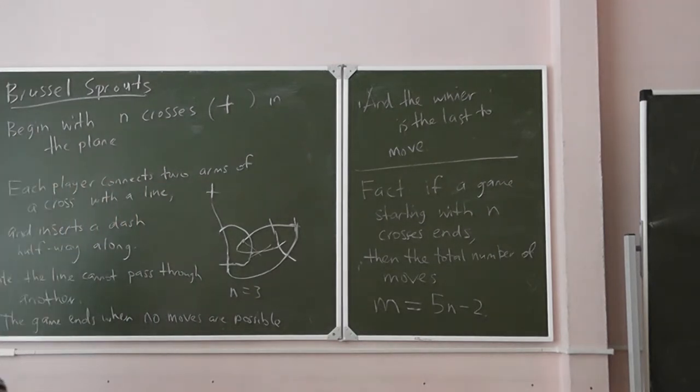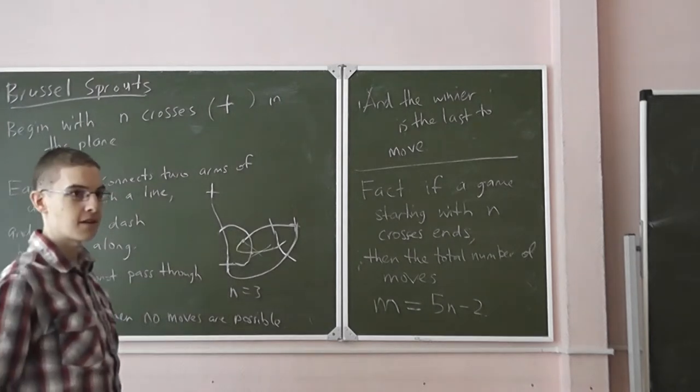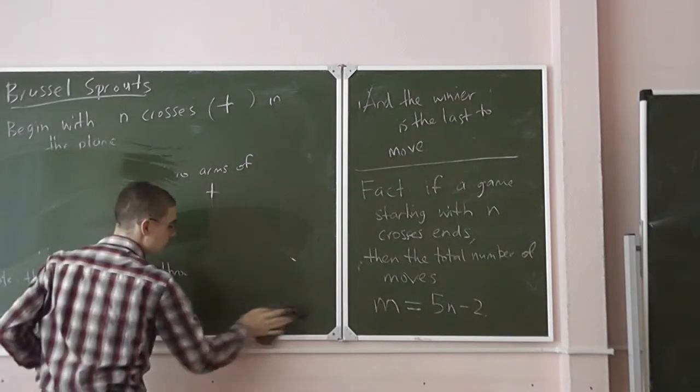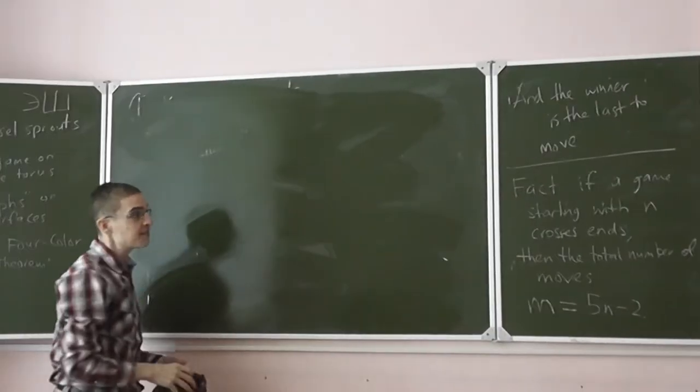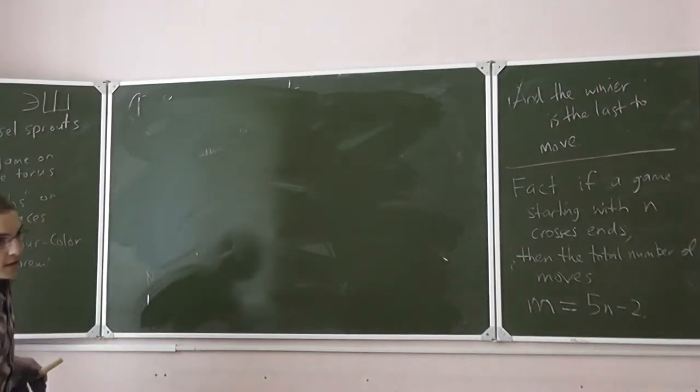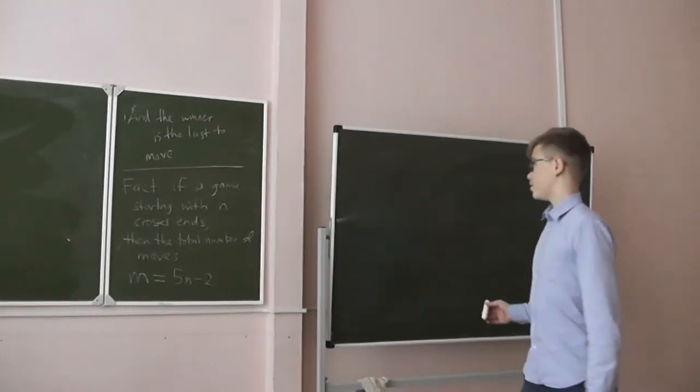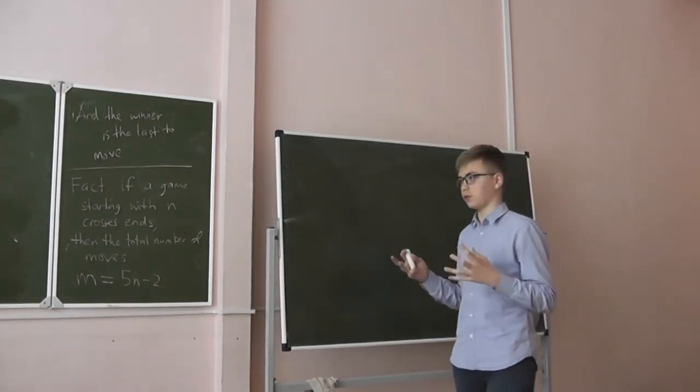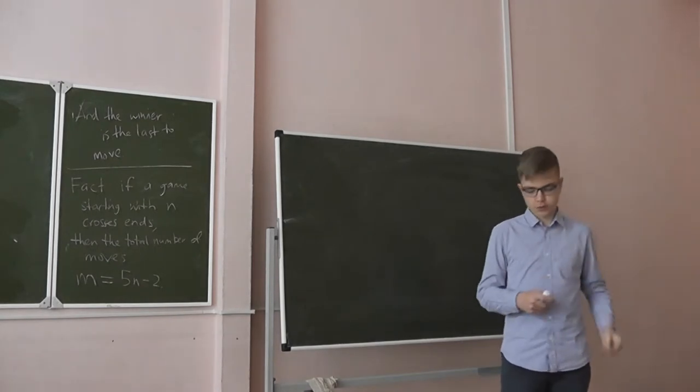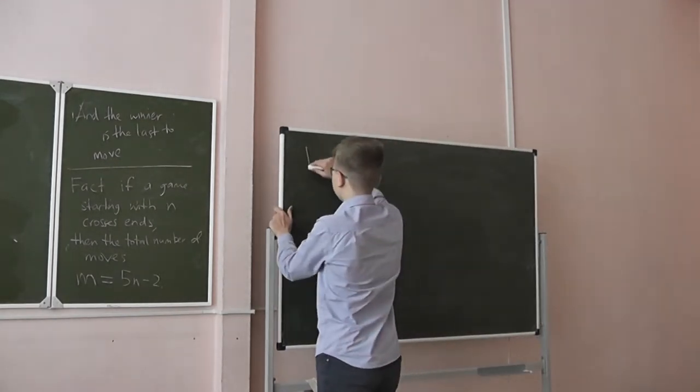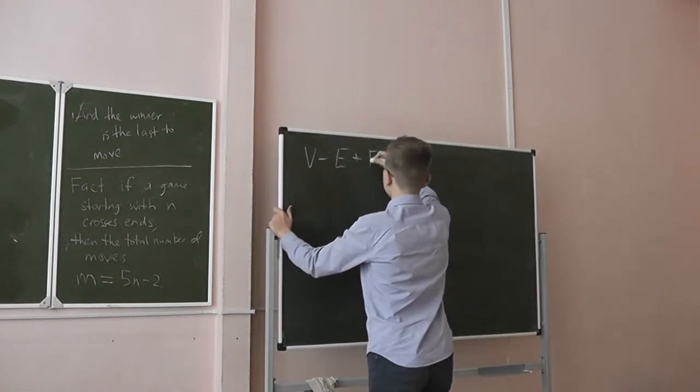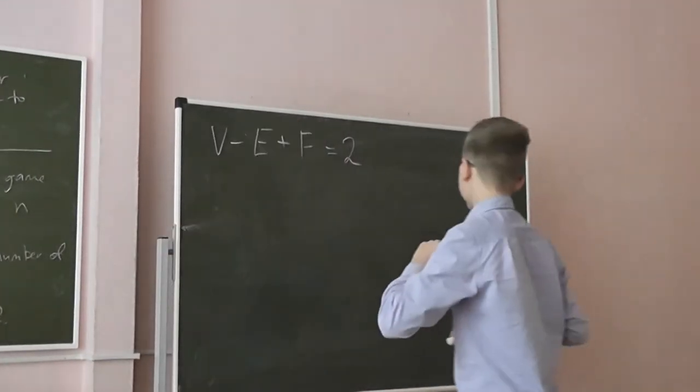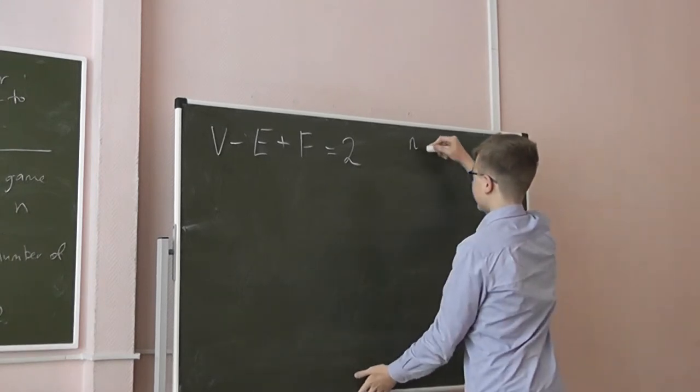To prove more, would you like to prove for us? Okay, because there's one ingredient that we used to see. So if the game ends, there are the Euler characteristics of our configuration of the Brussels sprouts at the end is equal to two. So we can write vertices minus edges plus faces is equal to two. Next, and we look at E.